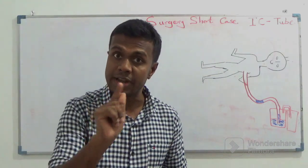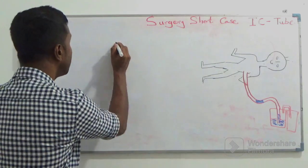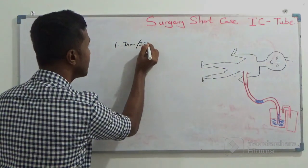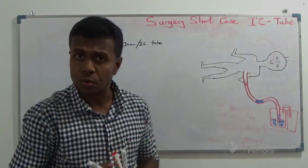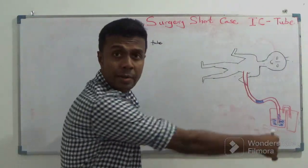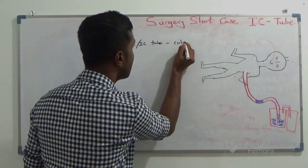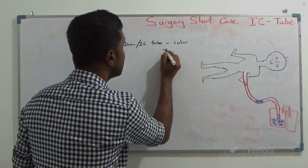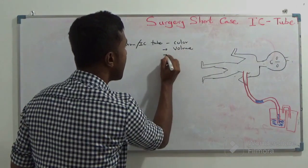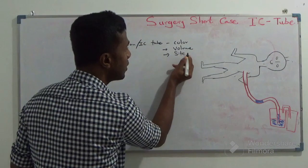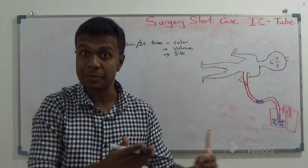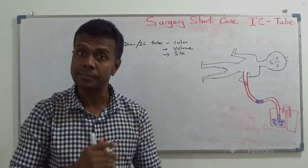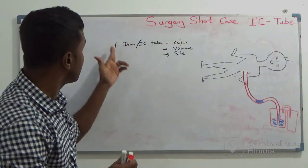The first thing you have to look for is the drain, drain bottle, and IC tube. What are the things you are going to look at? The color of the drain fluid — whether it is straw-colored or reddish — then the volume, and the site where it is inserted, whether it is inserted from the safe triangle or not.